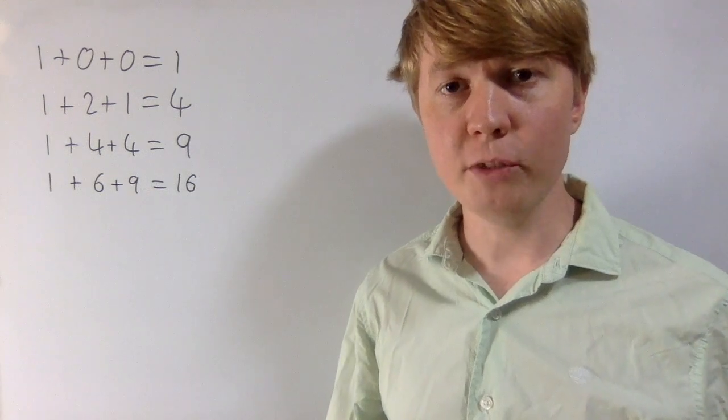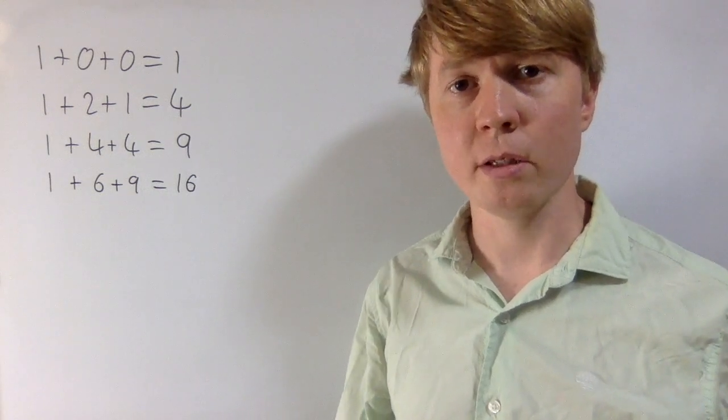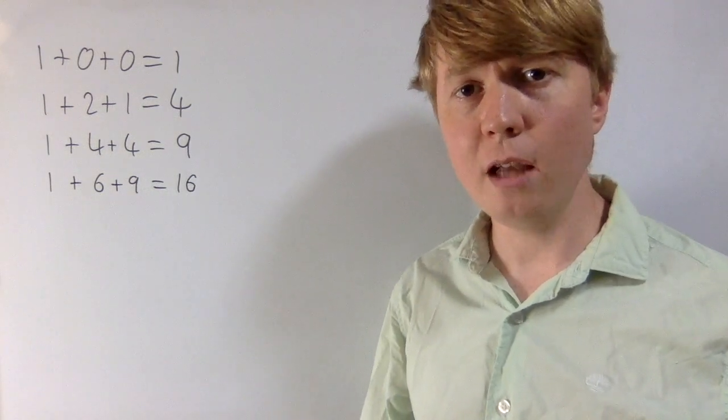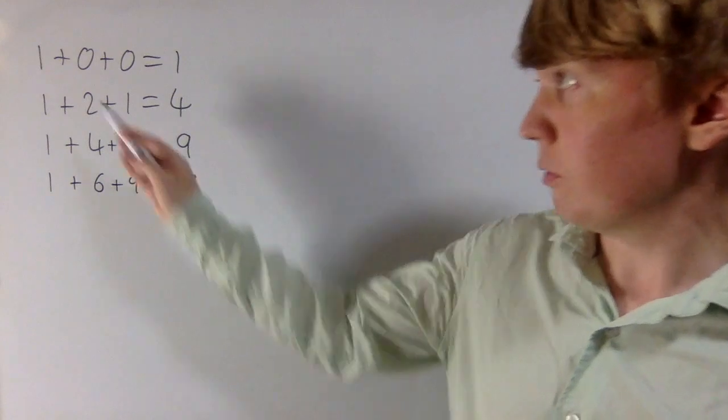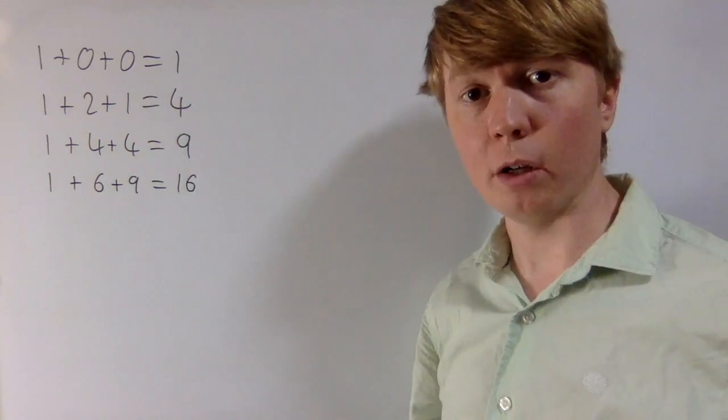We're going to have a look at the sum of digits of certain square numbers. If you look at 10 squared, the sum of digits of 10 squared is equal to 1.